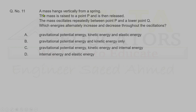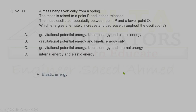Question 11. A mass hangs vertically from a spring. Since there is a spring, elastic potential energy is involved. When the mass is raised, gravitational potential energy is involved. When the mass oscillates, it is moving, so kinetic energy is involved. All three — elastic, gravitational potential, and kinetic energy — are present. Correct option is A.